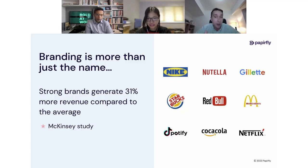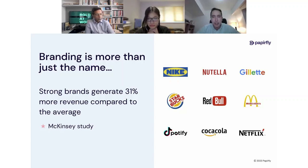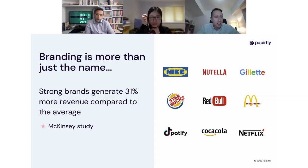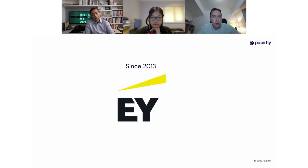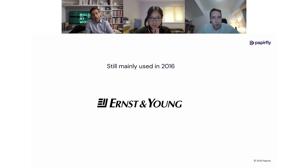Many companies understand the potential of branding and spend a lot of time and money creating a brand, expecting those high returns. However, maintaining brand consistency and truly leveraging a brand's value becomes increasingly difficult, especially as organizations grow and become more distributed. There is an arm's length distance between the brand owners and the people working with the brand on an everyday basis. For example, EY launched an official new logo and name in 2013, but when I joined them in 2016, the old logo was still being used in the majority of presentations.